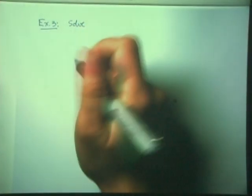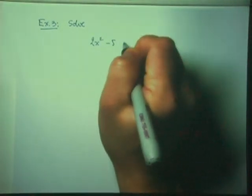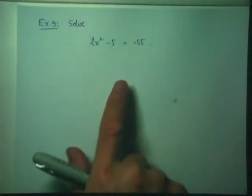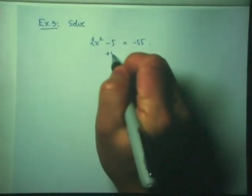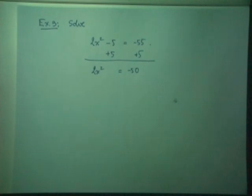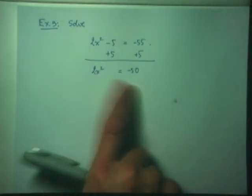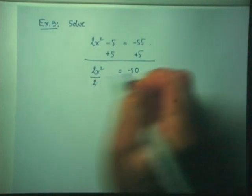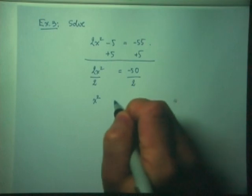In example number 3, we would like to solve 2X² minus 5 equals negative 55. The equation is not in ordinary form yet, so I need to bring it there. I add 5 to both sides, giving 2X² equals negative 50. Then I need one more step — I divide both sides by 2 to get a single square, giving X² equals negative 25.